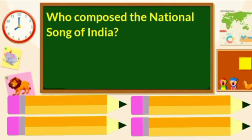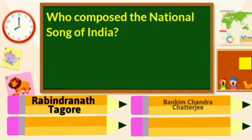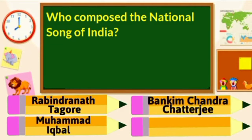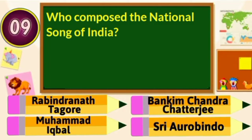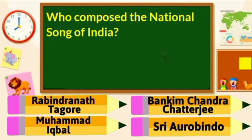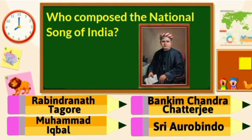Who composed the National Song of India? Rabindranath Tagore, Bankim Chandra Chatterjee, Muhammad Iqbal or Sri Aurobindo? Our National Song was composed by Bankim Chandra Chatterjee.